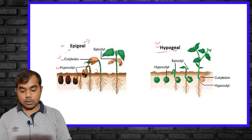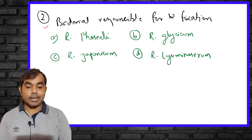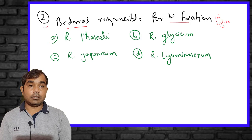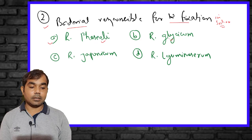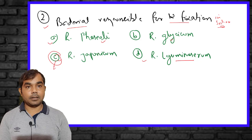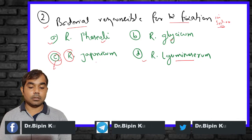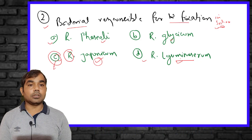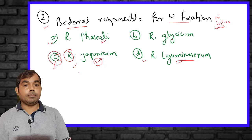The second MCQ asks: which bacteria are responsible for nitrogen fixation in soybean? Options are Rhizobium phaseoli, Rhizobium glycicum, Rhizobium leguminosarum, and Rhizobium japonicum. The right answer is Rhizobium japonicum. Different species are associated with different crops — japonicum is crop-specific to soybean.